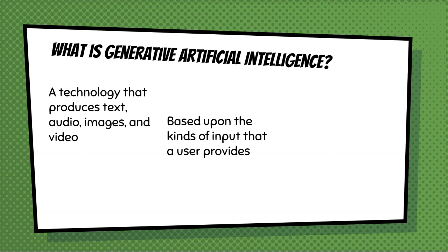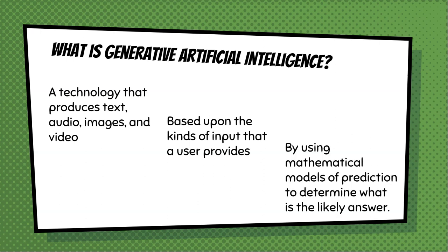It really responds to the kinds of input a user provides. This is why prompting becomes really important — in order for it to provide a good answer, you have to provide a good initial input. You can't be general; you have to be specific. It is not giving you a straightforward answer like talking to a friend. Rather, it uses what I like to call advanced mathematics, mapping its data set to predict the mathematically probable right answer.